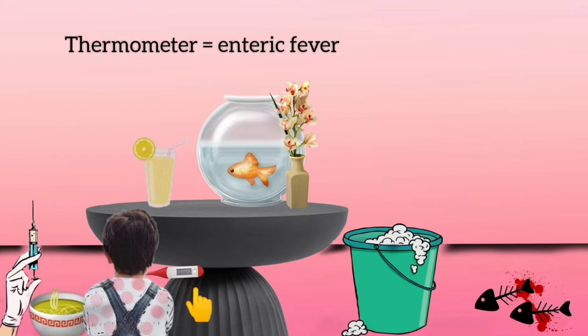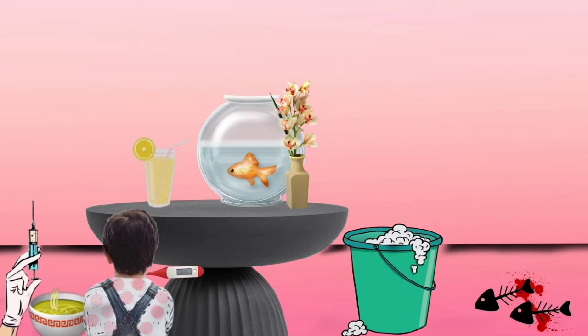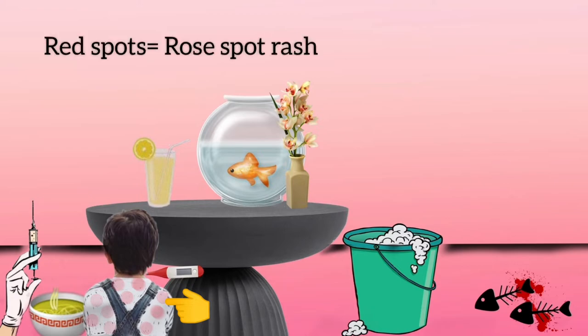The thermometer represents that Salmonella typhi causes enteric fever or typhoidal fever. The red spots on the boy's shirt represent rose spots seen in enteric fever.